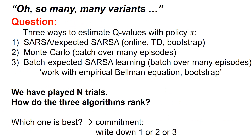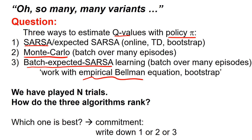In this video and the previous two videos, we have seen many different variants. Now the question is: is there one that's particularly good? Let us consider three ways to estimate Q-values, always with policy π. One is SARSA, reviewed in the first video of this series. Then there's the Monte Carlo approach — a batch over many episodes. And finally, batch expected SARSA, where with many episodes we work directly and empirically with the Bellman equation.